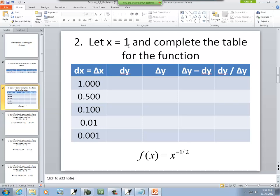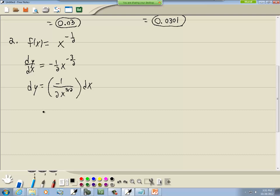Now, x is always equal to 1 on everything here. So, I'll go ahead and plug 1 in. And I get negative 1 over 2 times 1 to the 3 halves dx. 1 to any power is 1. Times 2 is 2. So, we've got negative 1 half dx. That's where our dy is.